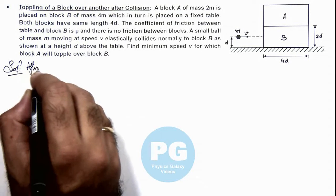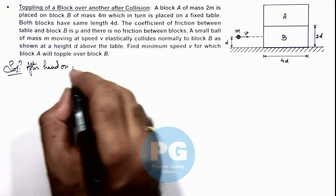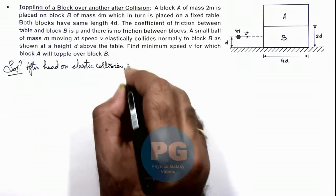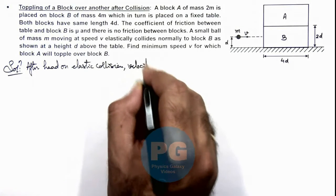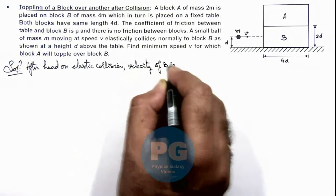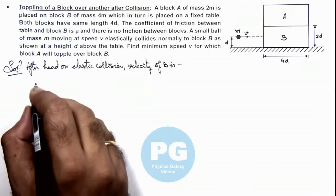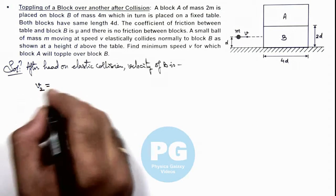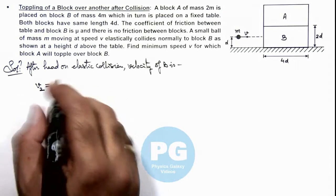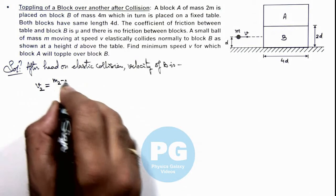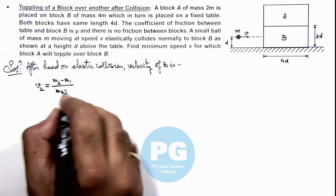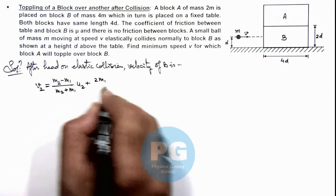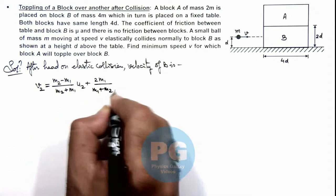After head on elastic collision, velocity of B is given as this velocity of B we can write as v2 if v1 is the initial speed and we can directly make use of the relation we have studied in concept videos that is m2 minus m1 upon m2 plus m1 multiplied by u2 plus 2 m1 by m1 plus m2 multiplied by u1.